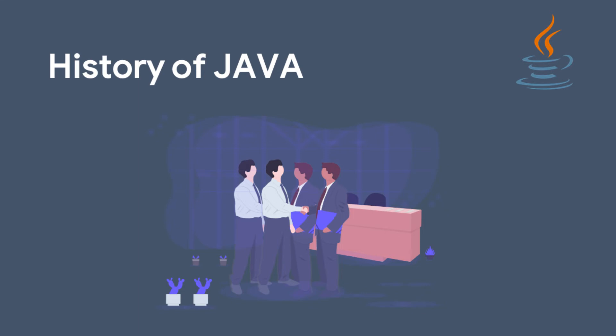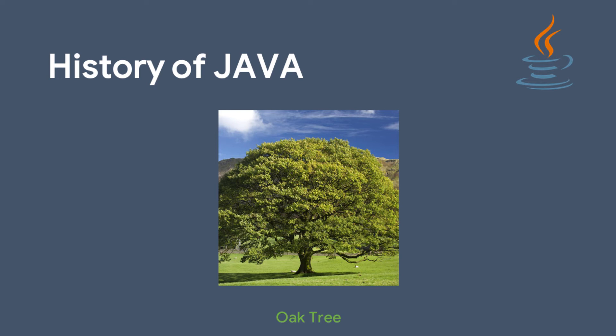The 30-member team started preparing the new programming language and took around two years. In December 1992, the complete programming language was ready. Now it was time to name it. James Gosling was in his cabin and noticed a tree he always saw through his window — its name was Oak. He proposed the name 'Oak', but Sun Microsystems said they already had an Oak programming language and didn't want people to think it was just an update.